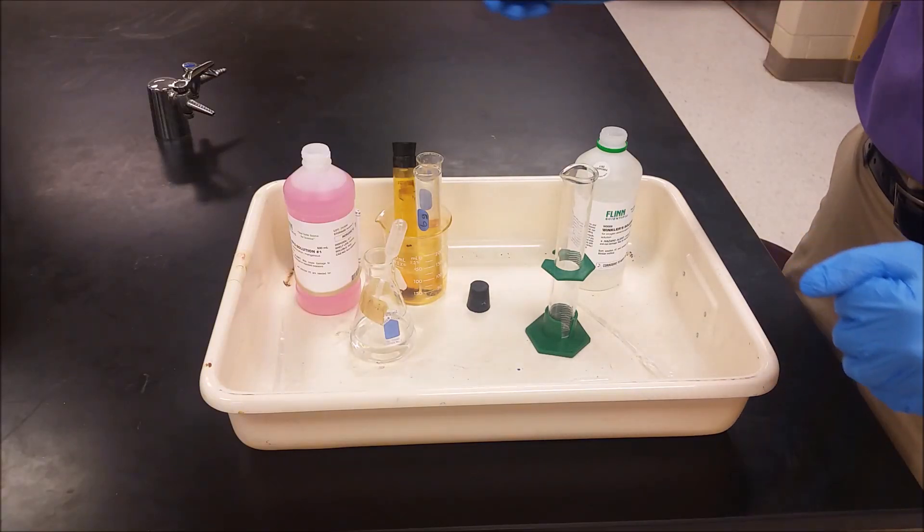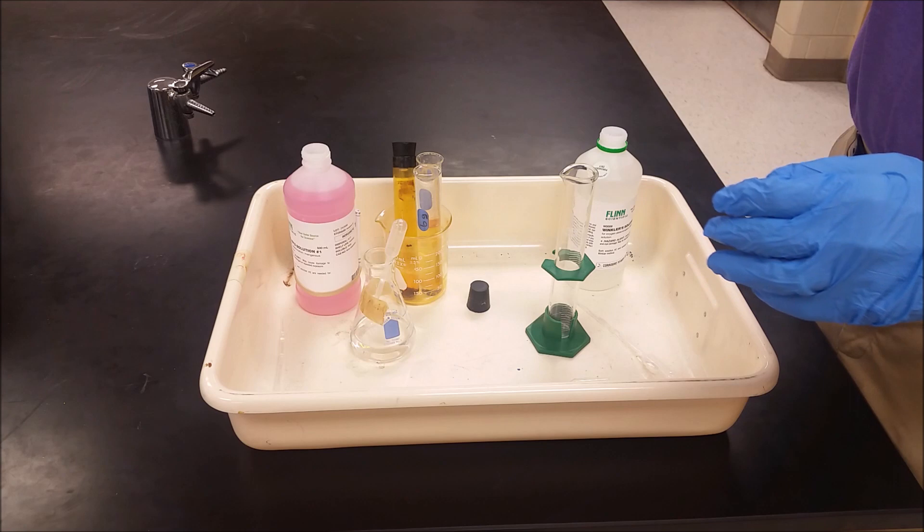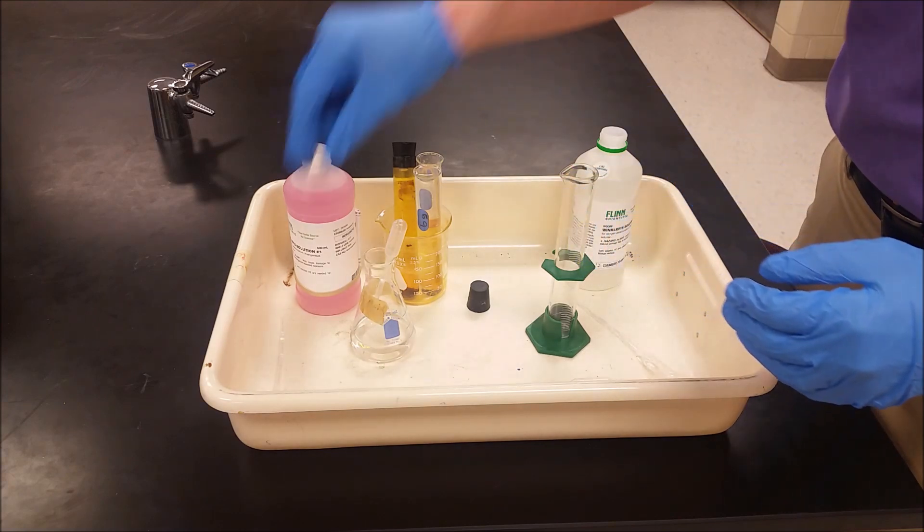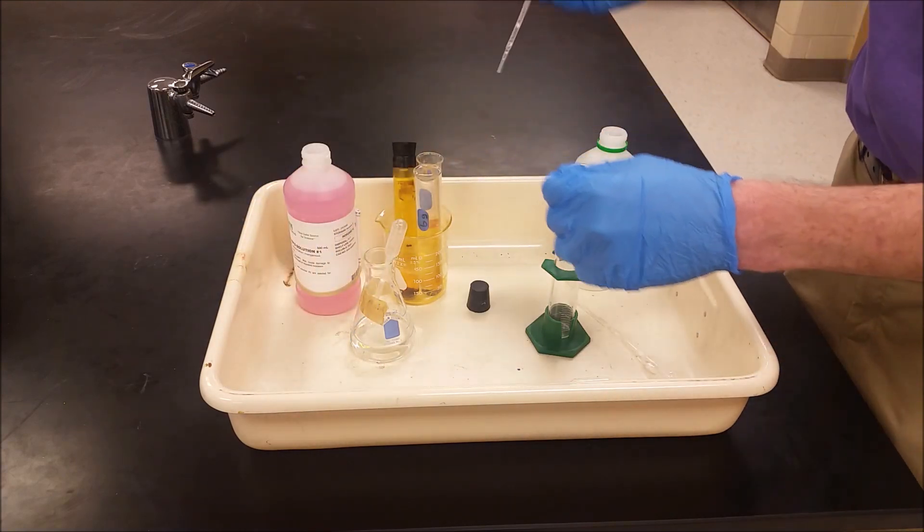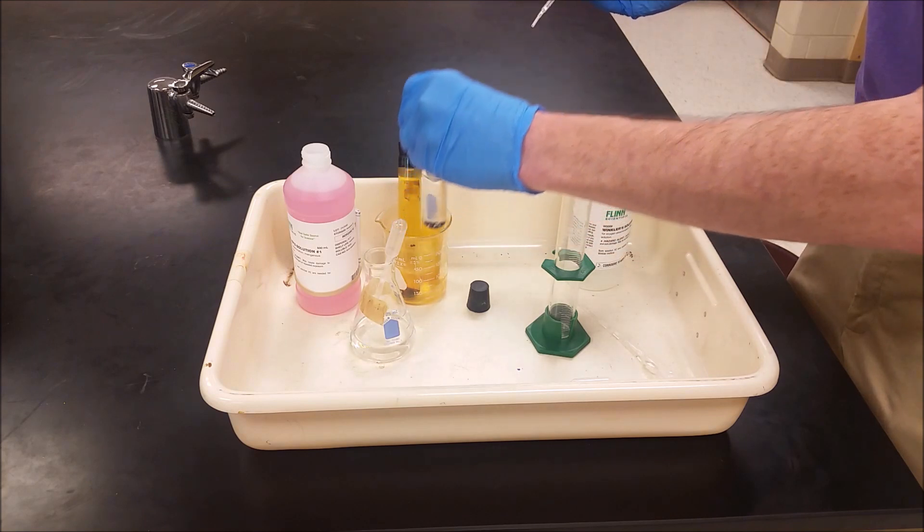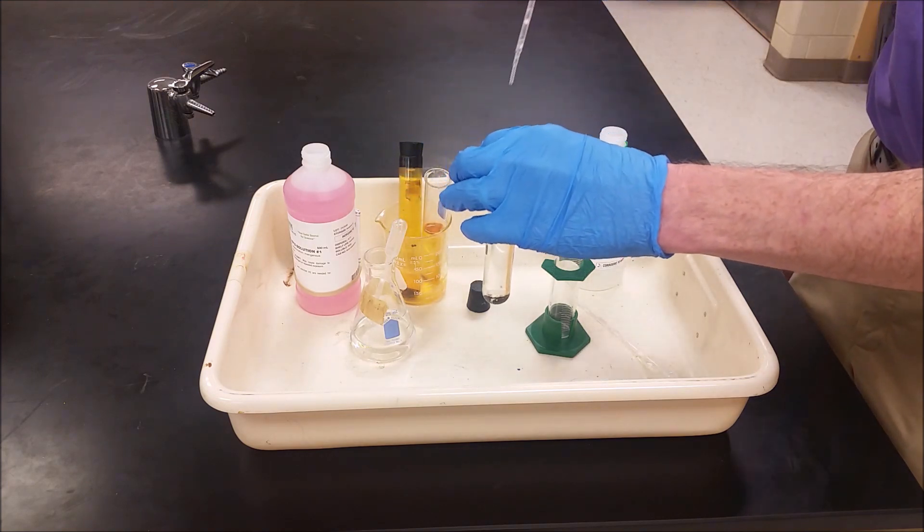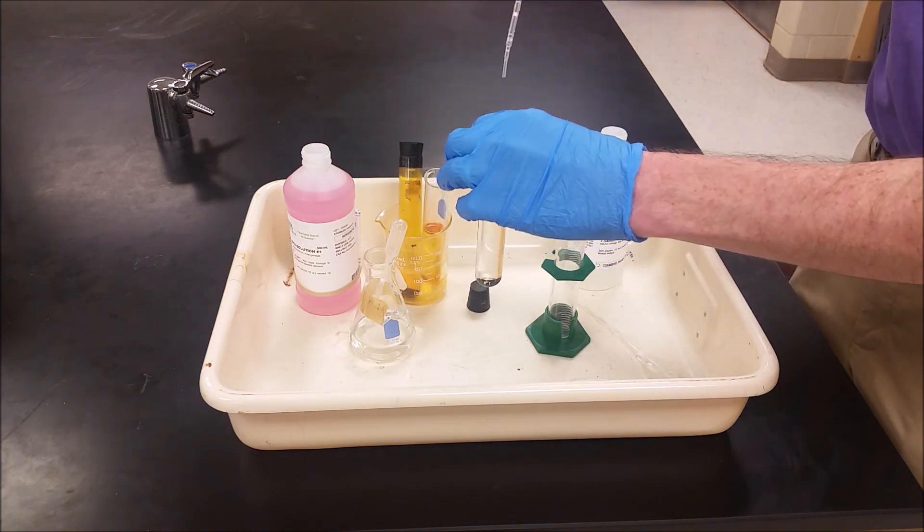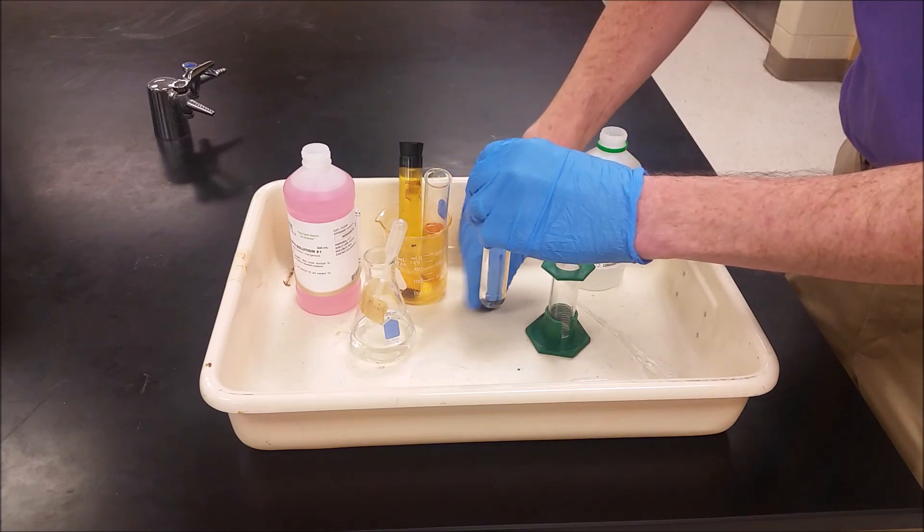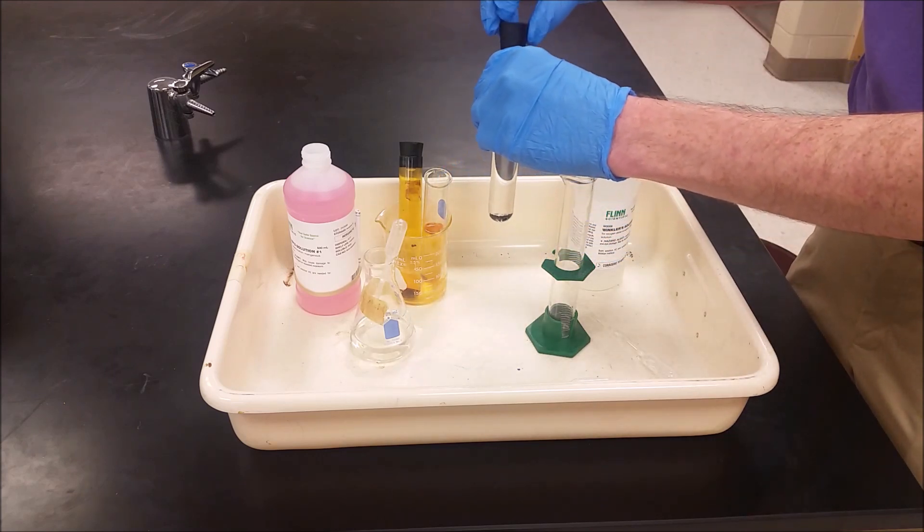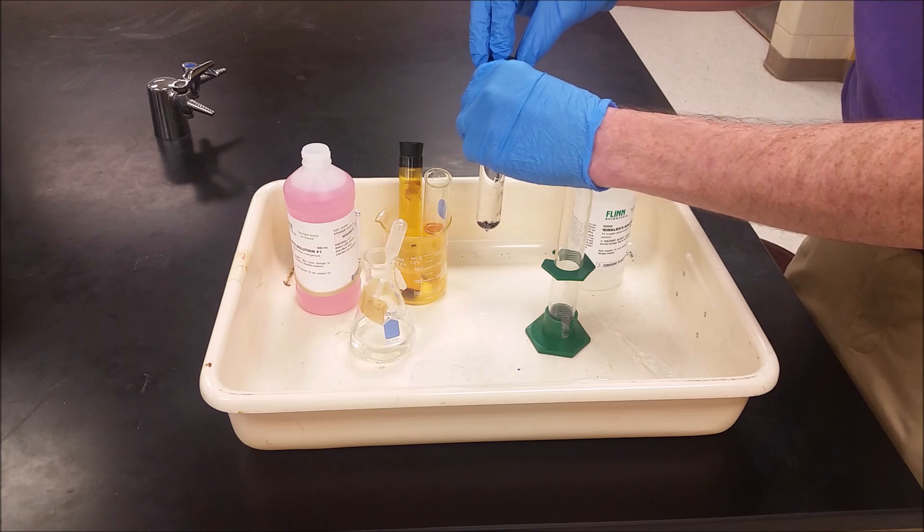Okay, so in order to set up the Winkler titration that we're going to run the error analysis on, I'm just going to show you a quick rundown of how this setup works. It's pretty simple. We have a very full water sample and we are going to add a little bit of solution to that. Before we do, we're going to get rid of a little water by letting it overflow a little bit so that way we don't spill.